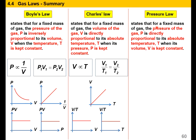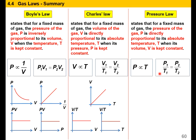Pressure Law states that for a fixed mass of gas, the pressure of the gas P is directly proportionate to its absolute temperature T when its volume V is kept constant — pressure directly proportionate to absolute temperature — or formula P1 over T1 equals P2 over T2. This is the graph for pressure versus absolute temperature.